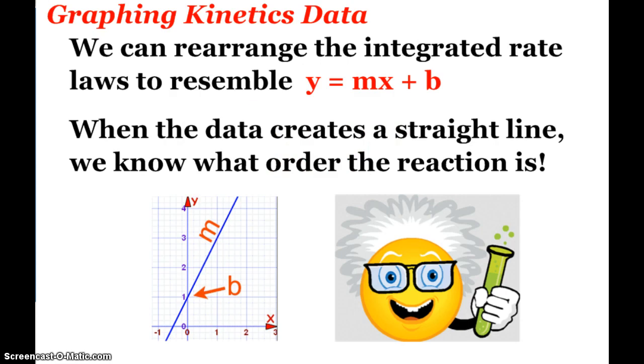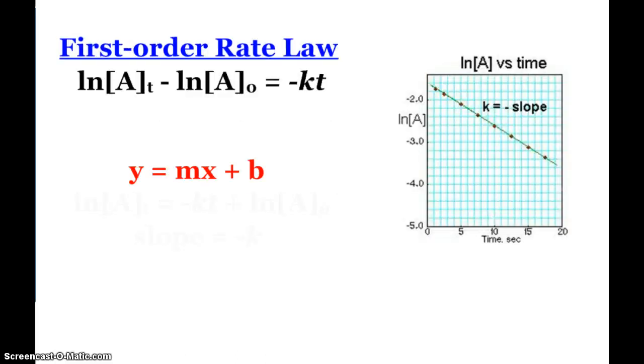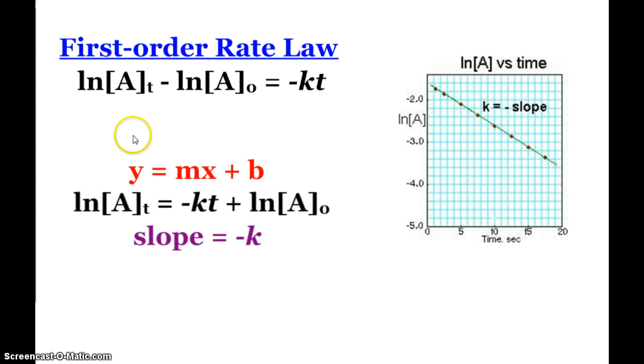So now we can graph kinetics data, and when we rearrange the integrated rate laws to resemble y equals mx plus b, depending on when we get a straight line we can figure out what the order of the reaction is, and this is what we'll be doing in lab. So a first order, this is my integrated rate law. If I rearrange it to match y equals mx plus b, then when I take a graph of the natural log of the concentration, or as we'll do in lab the absorbance, versus time, a first order reaction will give us a straight line, and the slope of that line will be the negative rate constant.